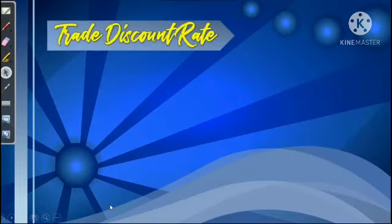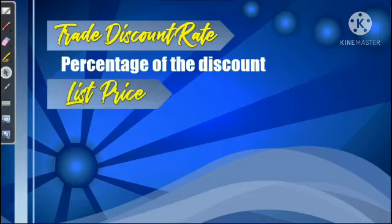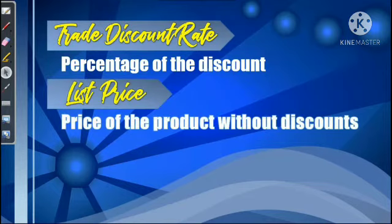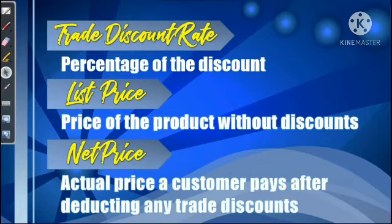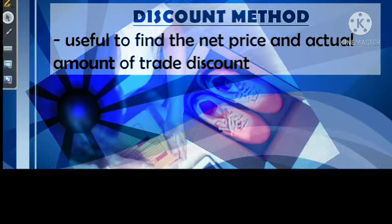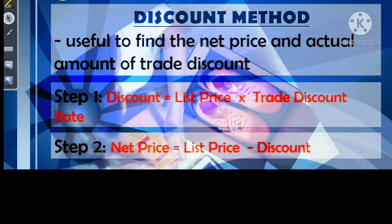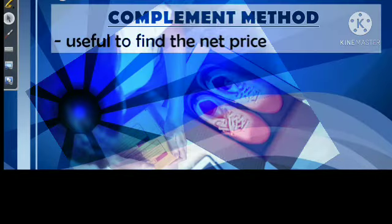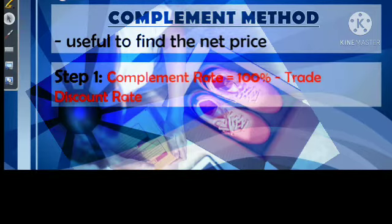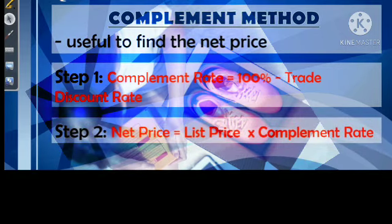Let us define each term. The trade discount rate refers to the percentage of the discount. The list price refers to the price of the product without discounts, and the net price is the actual price a customer pays after deducting any trade discount. We have two methods to compute the trade discount. The first is the discount method: Step 1, find the discount = list price × trade discount rate; Step 2, net price = list price − discount. For the complement method, Step 1, find the complement rate = 100% − trade discount rate; Step 2, net price = list price × complement rate.